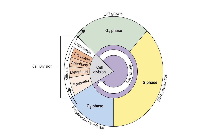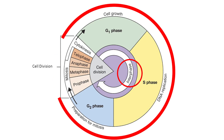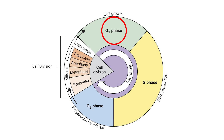Mitosis can be divided into several stages. Interphase is the preparatory phase where the cell grows, duplicates its DNA, and prepares for division. It consists of three sub-phases. G1 phase: in this sub-phase, cell growth occurs.